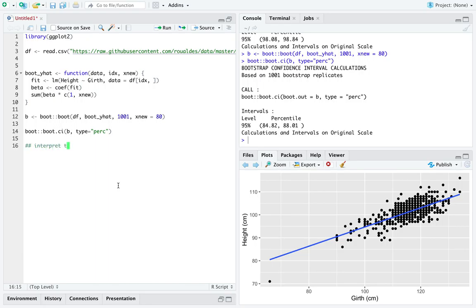Let's try to interpret the confidence interval in context of the data. We are 95% confident that when, and I'll emphasize it this time, an average donkey with girth of 80 centimeters.